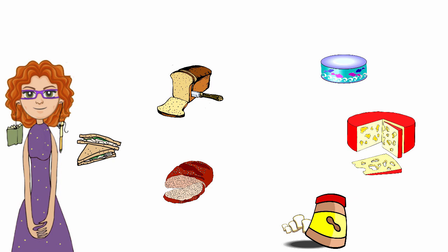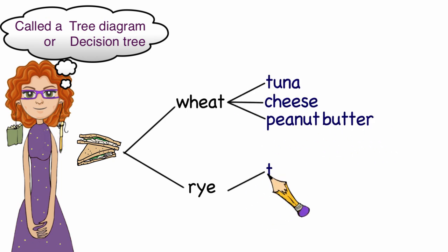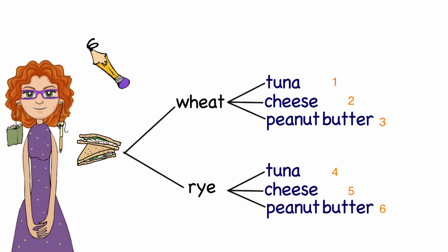Well one way to find that answer is to draw it out. I've got wheat and rye, and then for wheat I have the three options of tuna, cheese, or peanut butter. And for rye I have three options of tuna, cheese, and peanut butter. And we can see pretty quickly that we have six possible options.